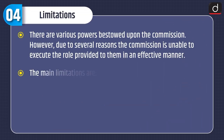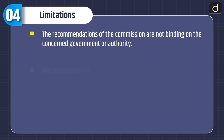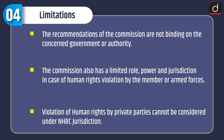There are various powers bestowed upon the Commission; however, due to several reasons, the Commission is unable to execute its role in an effective manner. The main limitations are: the Commission is not empowered to inquire into any matter after the expiry of one year from the date of the act of violation; the Commission has no power to punish the violators of human rights or to award any relief, including monetary relief, to the victim; the recommendations of the Commission are not binding on the concerned government or authority; the Commission also has a limited role, power and jurisdiction in cases of human rights violations by members of the armed forces; and violations of human rights by private parties cannot be considered under NHRC's jurisdiction.